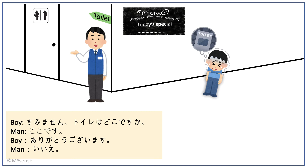Now let's listen to the full dialogue between the boy and the man working at the restaurant. 'Sumimasen, toire wa doko desu ka?' 'Koko desu.' 'Arigato gozaimasu.' 'Ii e.'